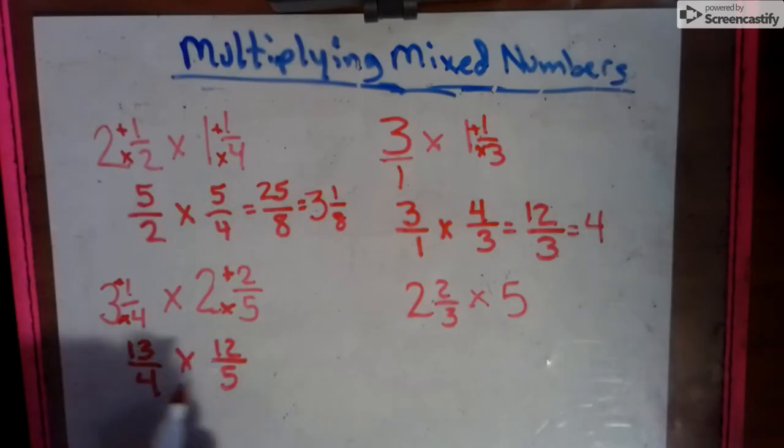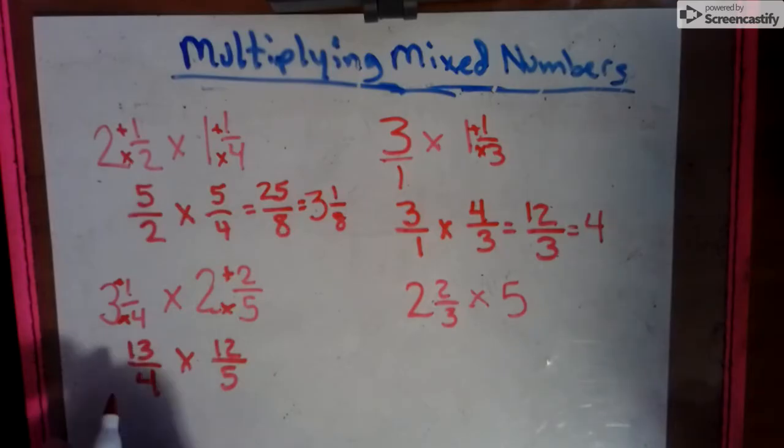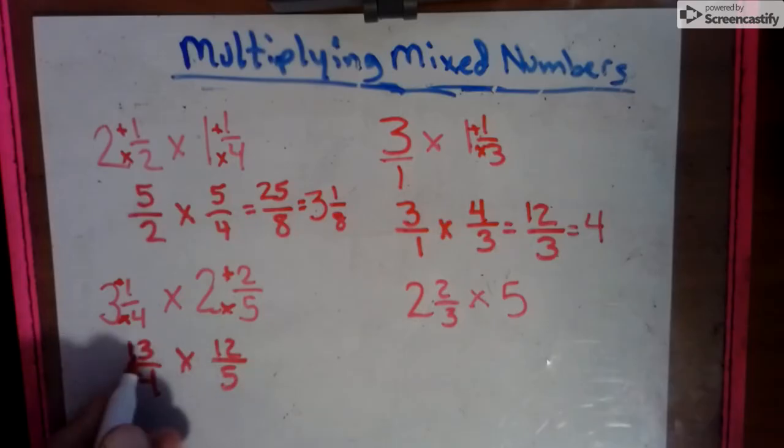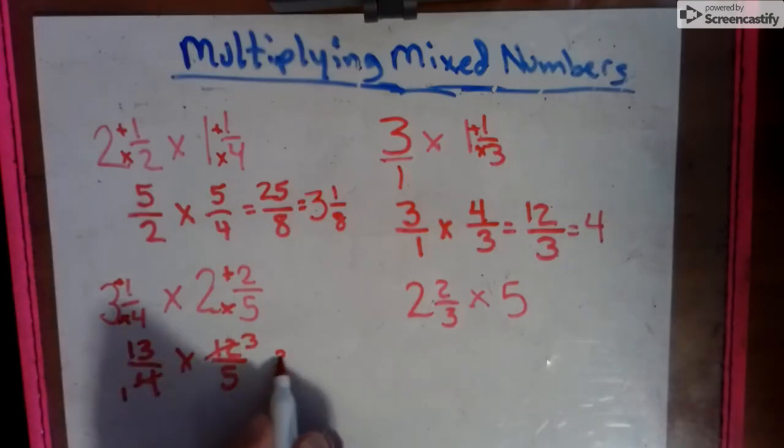So then we have to do some math here. We could do a little diagonal cross-outs. So we can kind of look at the diagonals and see if there's anything in common. Or we can go straight across multiplication. If we did a little diagonal cross-out, 5 and 13 have nothing in common, but a 4 goes into a 4 once, and a 4 goes into a 12, 3 times. So 13 times 3 is 39, and 1 times 5 is 5.